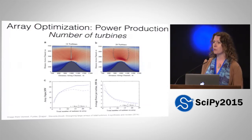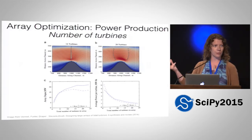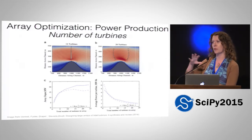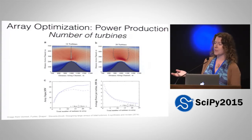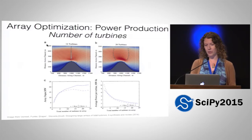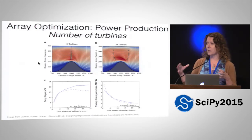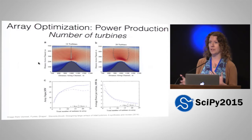So I'd like to talk about optimizing from three different perspectives representing these three different collaborators in this project. First, array optimization — an array being having several turbines. One turbine's not going to get you too far in terms of power production. So we're thinking about having a farm or an array of turbines situated somehow in a location generating power. First we're going to think about that array optimization from a power production perspective.